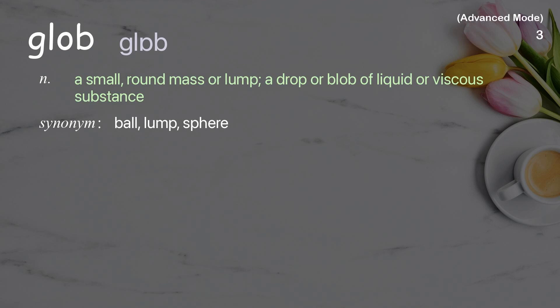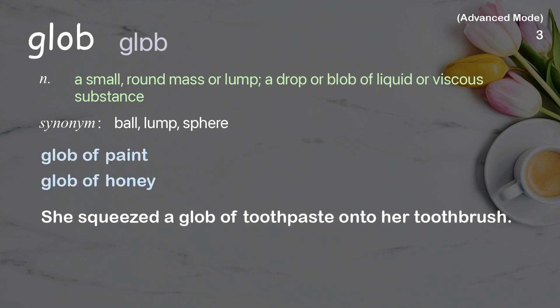Glob: a small round mass or lump; a drop or blob of liquid or viscous substance. Examples: glob of paint, glob of honey. She squeezed a glob of toothpaste onto her toothbrush.